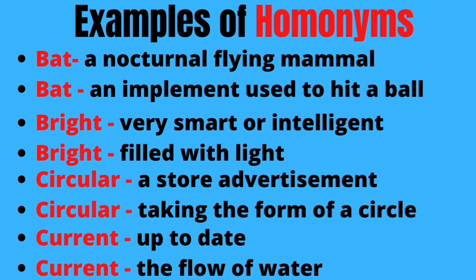Let me know in the comment section if you're understanding so far. Another example is 'circular': a store advertisement, and also a form of a circle. When you advertise something, it is called a circular. Another example is 'current': when something is up to date, you say it is current, and also the flow of water is called current.